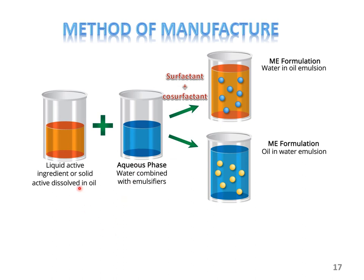You have the oily phase and the aqueous phase. The drug may be dissolved in whichever phase it is soluble in, or both phases may consist of different drugs. This is followed by addition of the surfactant and co-surfactant system and simple stirring to give either a water-in-oil type or oil-in-water type of emulsion which is then homogenized and allowed to equilibrate.